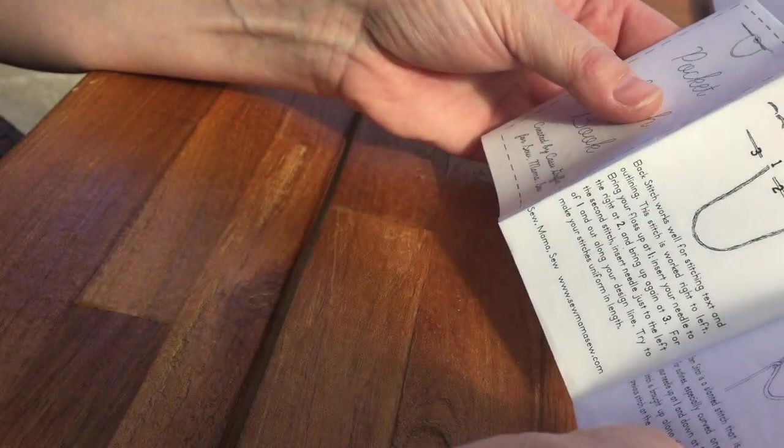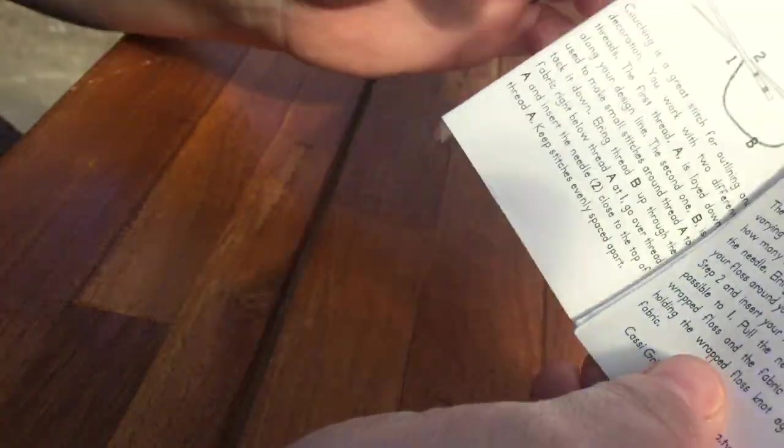This way I can have my pocket stitch book like this, and then I have all the stitches in a little book format. The one we're going to learn next is called a French knot.